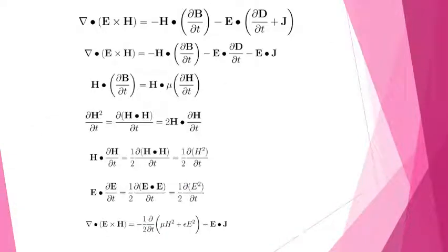By applying vector identity in the above equation, we can rewrite the equation as del dot E cross H equal to minus H into dB by dT minus E dot dD by dT plus J.